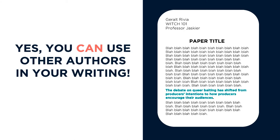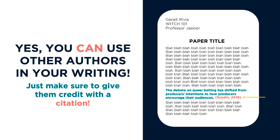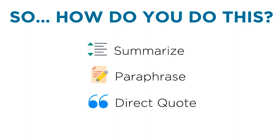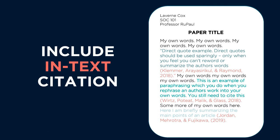You can easily avoid plagiarizing by letting your readers know that you are citing someone else's work. There are three main ways you can incorporate someone else's work into your paper: by summarizing, paraphrasing, or direct quoting. Regardless of which path you choose, you need to include an in-text citation in your paragraph to give credit to the original author.